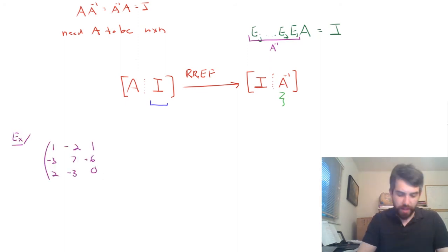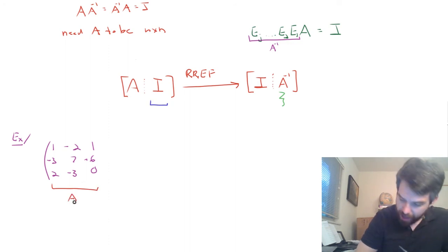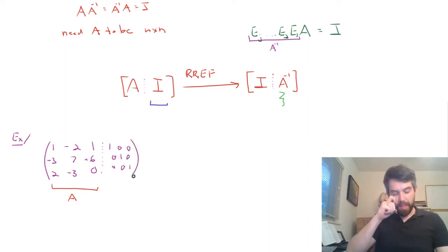Alright, so now let's see an example. I've begun here with a matrix A, and I haven't put in the closing bracket because I'm going to append to it the identity. So, one's down the main diagonal, zero's everywhere else.